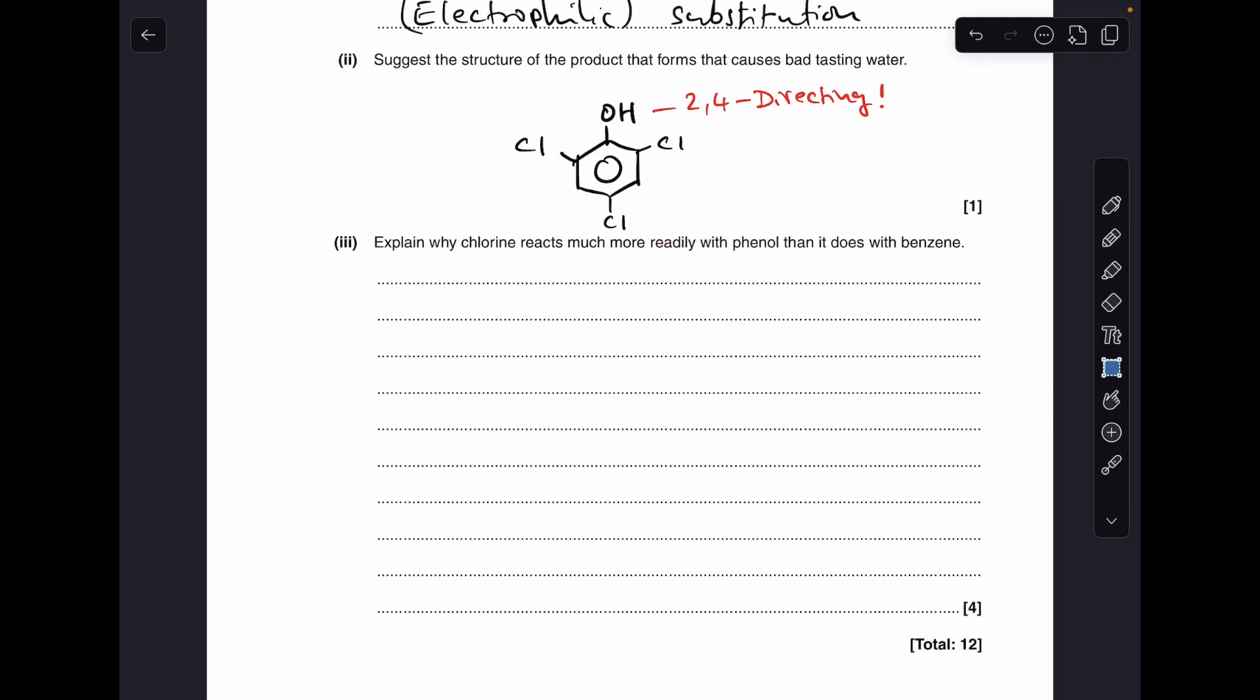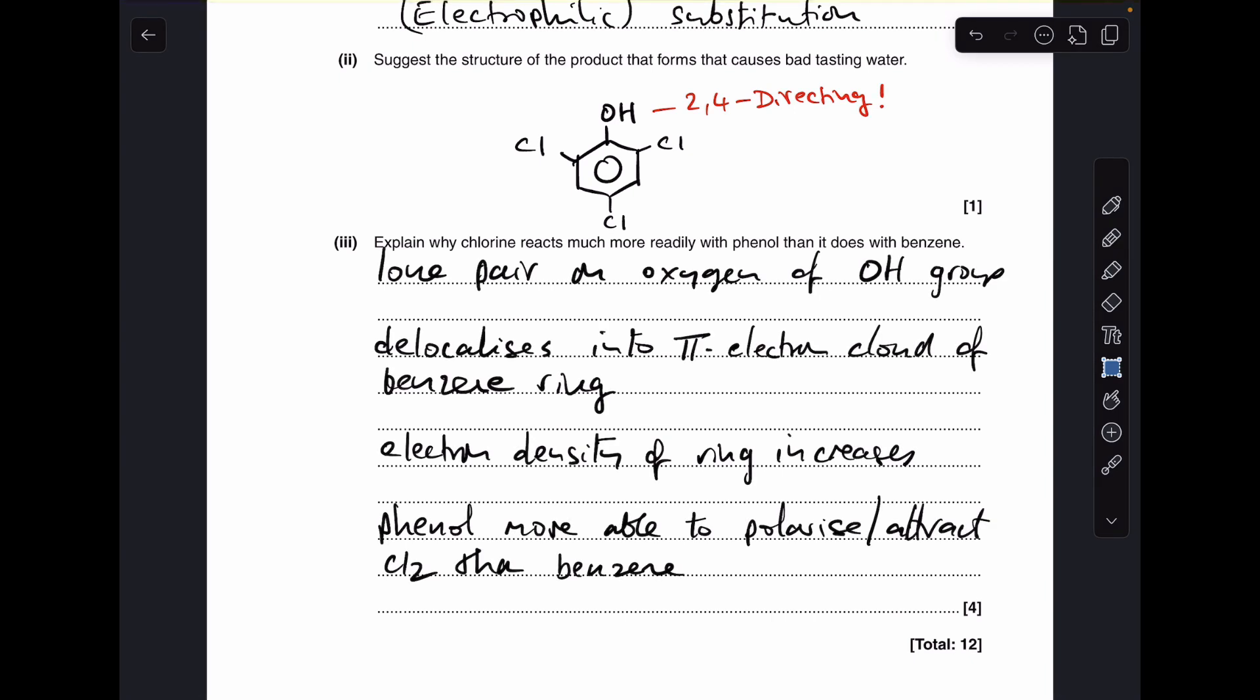And finally, why does chlorine react more readily with phenol than it does with benzene? So this is a classic question straight off the specification. So we need to say this, the lone pair on the oxygen of the OH group, there's your first mark, delocalizes into the pi electron cloud of the benzene ring. Second mark, electron density of the ring is increased. Third mark, phenol is more able to polarize or attract chlorine than benzene is. And that's your final mark there.